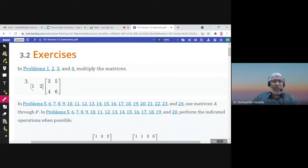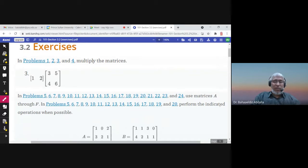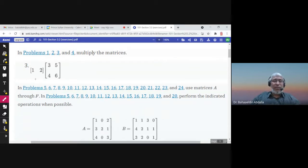Multiply the matrices. We need to multiply these two matrices. This matrix has order 1 by 2, 1 row and 2 columns. This matrix is 2 by 2. We can multiply them because the number of columns in the first matrix equals the number of rows in the second matrix. The product matrix will be of order 1 by 2, so 1 row and 2 columns.